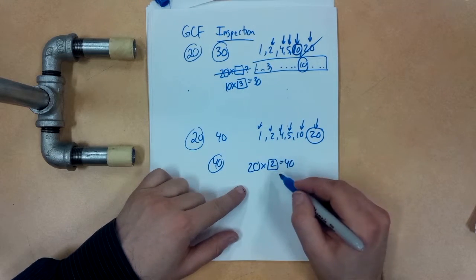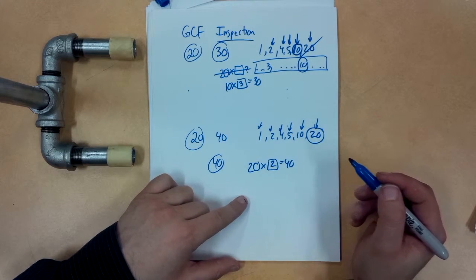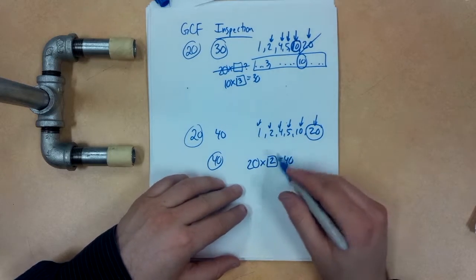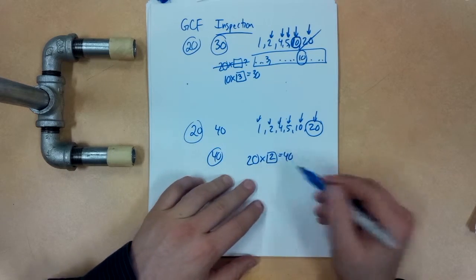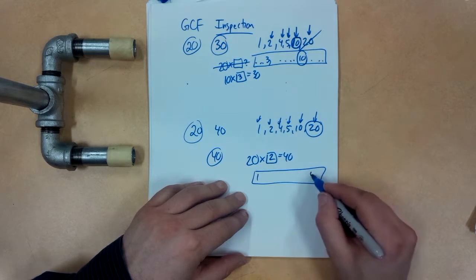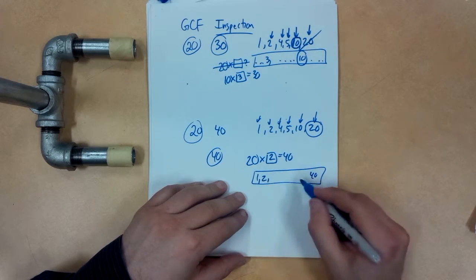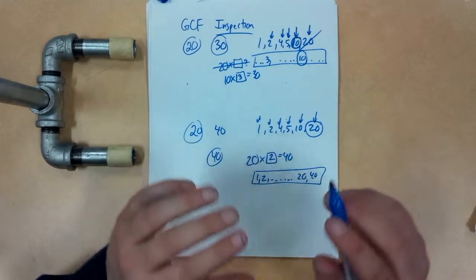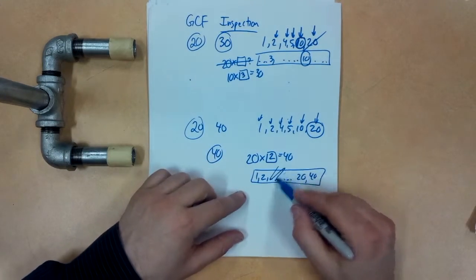We know it's 20 times 2 as the rolling janitor cart goes by. Okay, so 20 times 2 gives us 40. So that means that on the list of factors for 40, you know, we have 1 and 40. And then somehow we're going to have 2 and 20 are going to be in there. And all this stuff in the middle doesn't matter. We just saved a bunch of time.